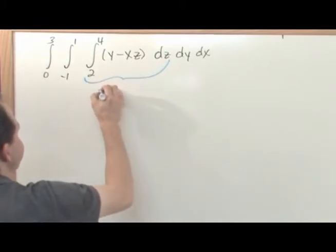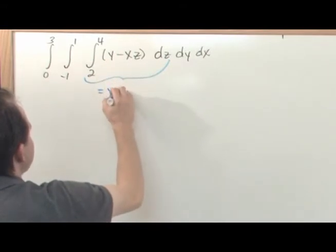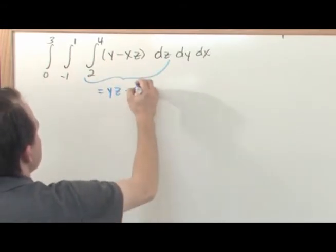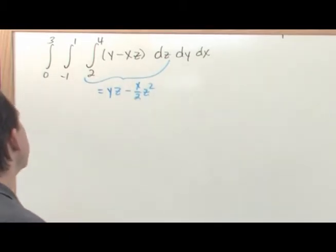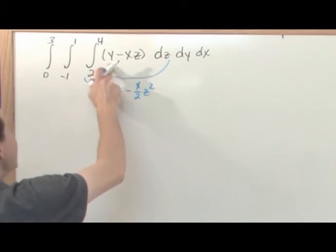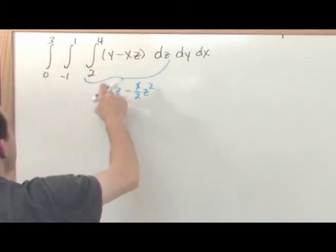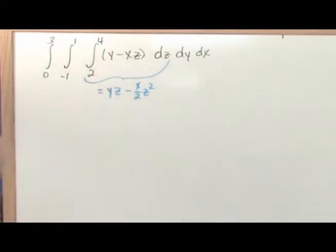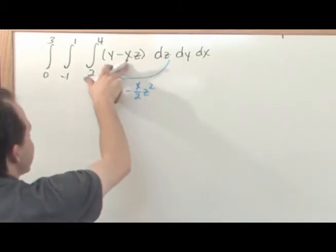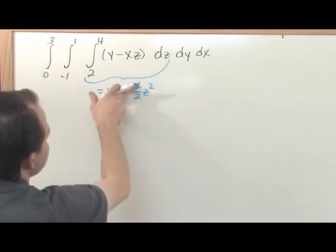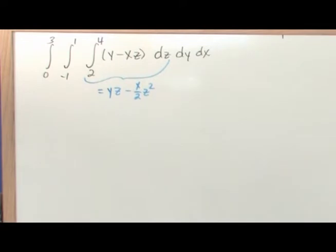Since y is a constant, the answer to this integral is y times z minus x over 2 times z squared. If I'm integrating over dz, and x is a constant, it comes down and you have your variable — that's a simple integral from calculus 1. x is a constant, so it just comes out giving 1/2 z squared, a regular polynomial integral. Evaluate this from 2 to 4, the limits of integration along z.